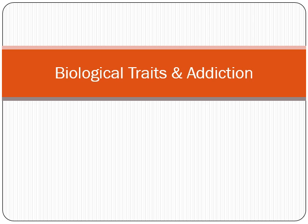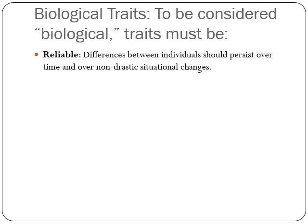We're going to talk about biological traits and addiction. To be considered biological, traits must be reliable — differences between individuals should persist over time and over non-drastic situational changes. If you looked at the BIS-BAS model, for example, there were clear distinctive traits different between people who are high in BIS and people who are high in BAS, and those have to persist over time and be consistent.